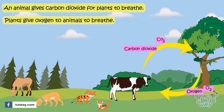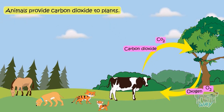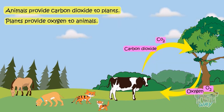So there is a give-and-take relationship between plants and animals. Animals provide carbon dioxide to plants, and plants provide oxygen to animals.